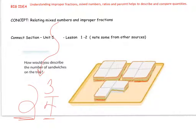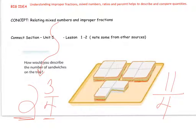Some of you might have talked about the number of actual pieces of bread. So then you might have said that there are eleven pieces total. So eleven-fourths of a sandwich.